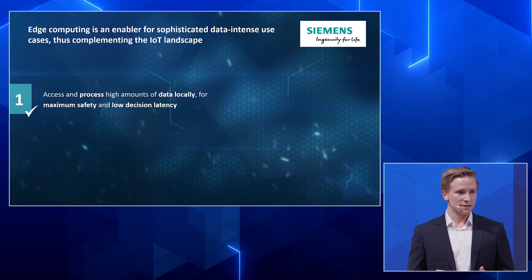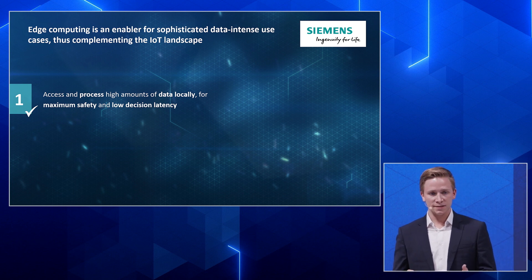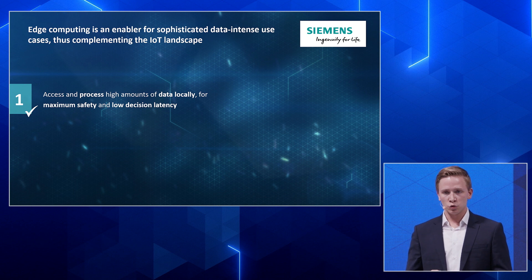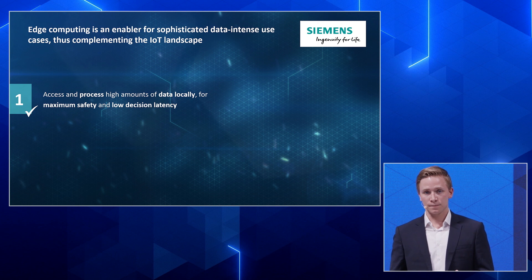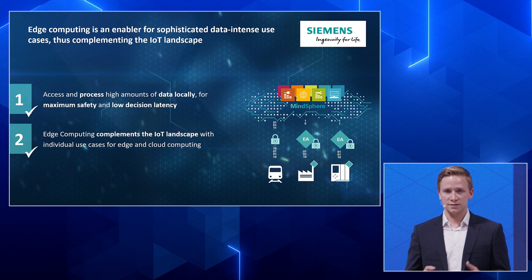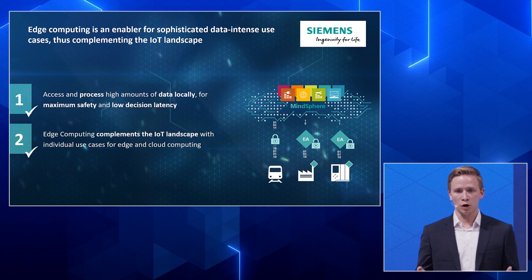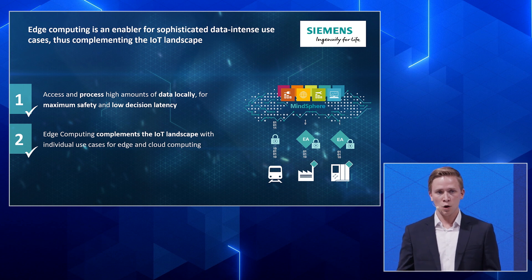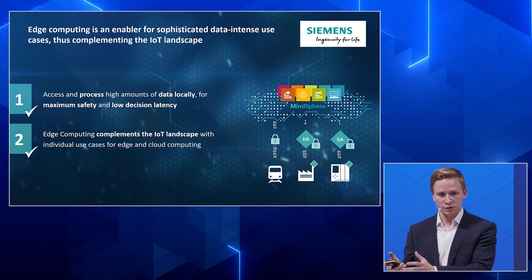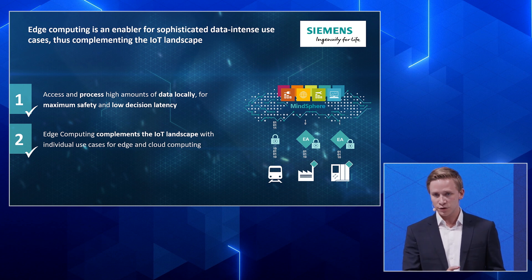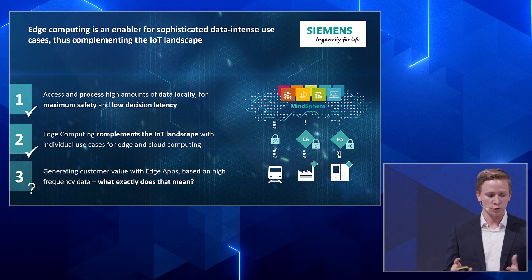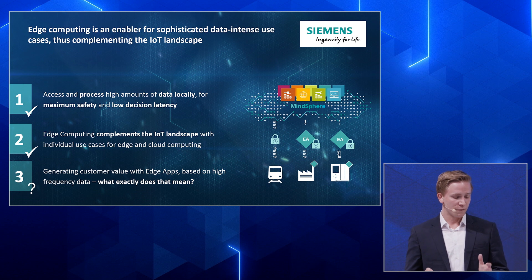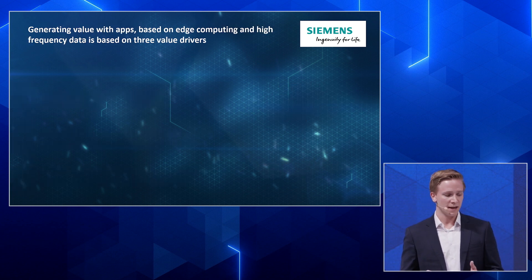What we've learned so far: you need edge computing to access high-frequency data, to process it locally, and to have very low decision latency. Edge computing is an important component of the IoT landscape — there are specific use cases where cloud computing makes sense, and others where edge computing really makes sense. But we haven't precisely discussed yet how data is turned into value exactly. Let me introduce two use cases.